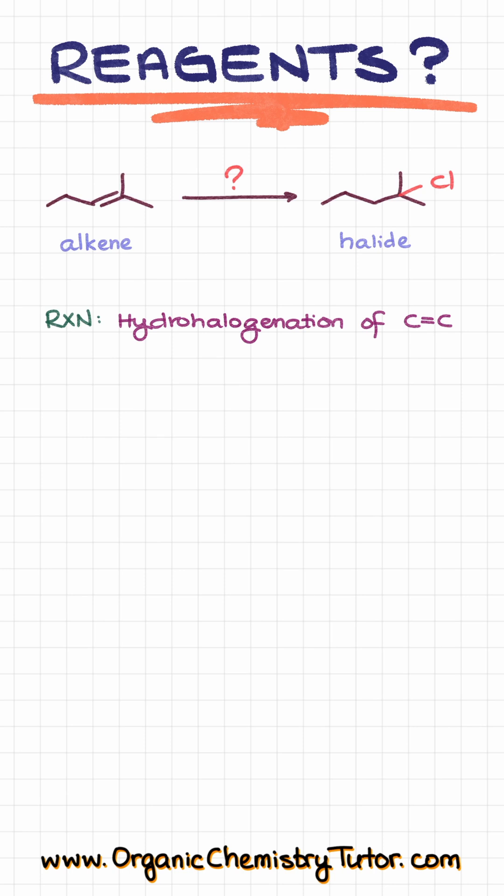This means we are looking at a simple hydrohalogenation of alkenes, and we know it's going to be a simple hydrohalogenation because our chlorine over here is located on a more substituted carbon of what used to be a double bond rather than on the less substituted one.